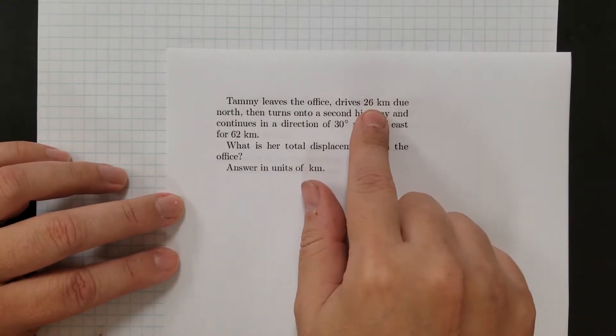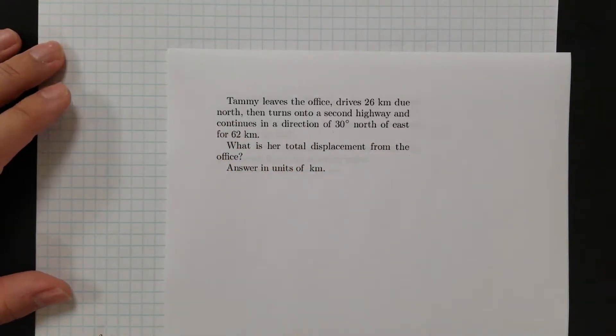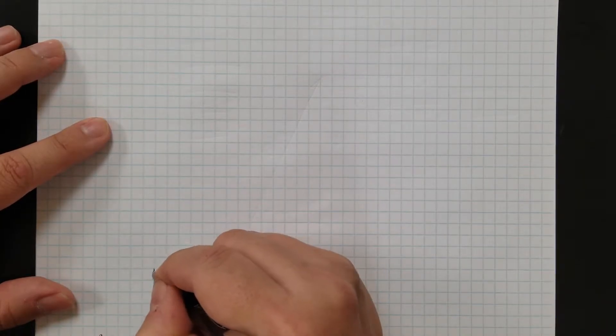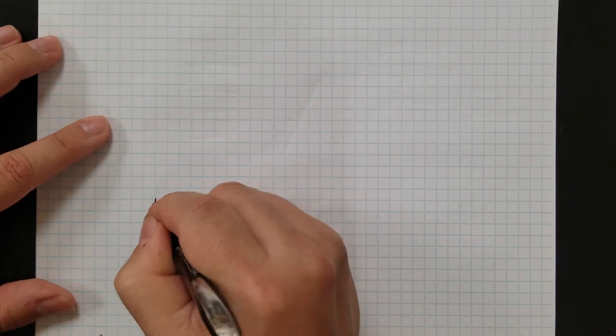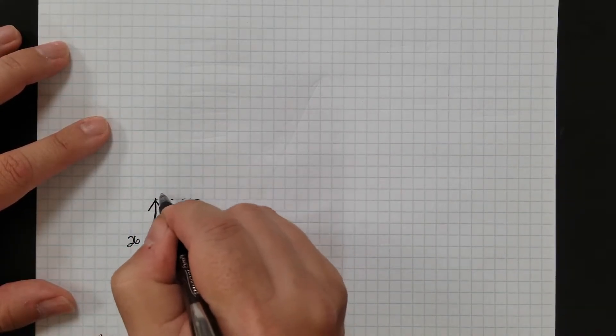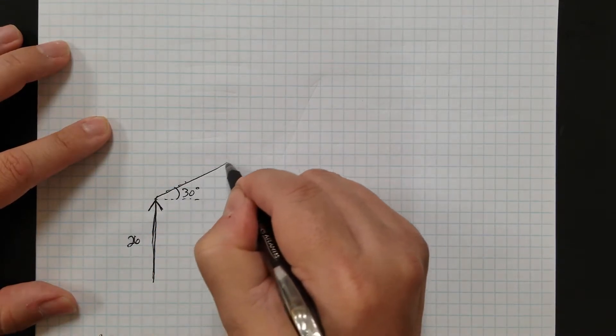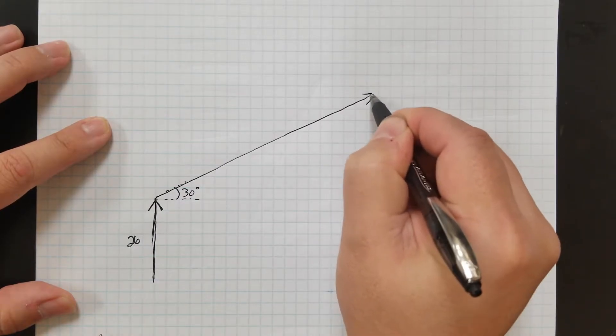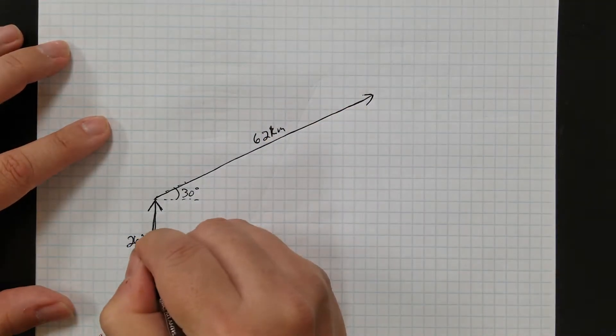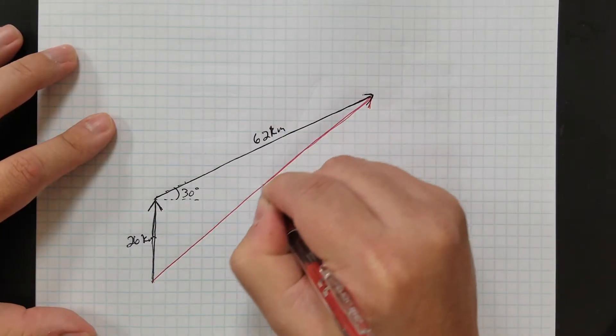Okay, here's the next problem. Tammy leaves the office, drives 26 kilometers north, turns on a second highway, continues 30 degrees north of east for 62 kilometers. What's the total displacement from the office? Okay, so again, start by drawing it out. So I'm going to do down here, I'll go 26 north. So, I don't know, maybe draw it that far. So we'll call that my 26 kilometer north vector. And then I'm going to go 62 kilometers 30 degrees north of east. So if that's east, this would be 30 degrees north of east. So it's going to go 62. So maybe like that. I want to draw kind of the right magnitude. Okay, so this is 62 kilometers, and 26 kilometers. So my resultant, I'm going to draw my resultant start to finish. All right, there's my resultant.